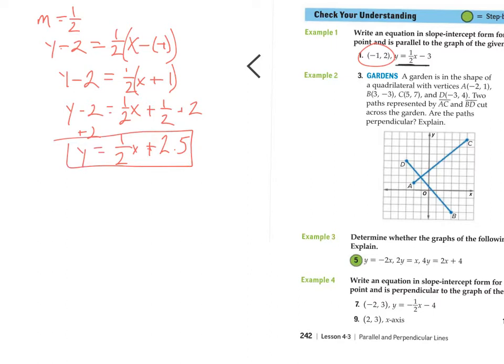Let's take a look at problem number three. So it tells me we've got a garden, it's in the shape of a quadrilateral, it gives me vertices and coordinates and all that stuff. And then it says, are the two paths represented by AC and BD perpendicular? Well, if they're perpendicular, that means that they will form a 90 degree angle. And if they form a 90 degree angle, that means their slopes will be opposite reciprocals.